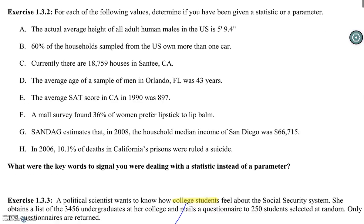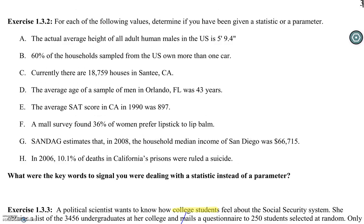For the next exercise, I want you to take a moment for each item, read through and decide if you're given a statistic or a parameter. I'll do the first one, and then give you a chance to pause and try it on your own. The first statement says the actual average height of all adult human males in the U.S. is 5 foot 9.4 inches. This is a parameter — a ridiculous one, because there's no way we could get the height of every single adult male in the U.S. But two words made me choose parameter: actual (this is the true value, not an estimate) and all (it's from everybody — the entire population).